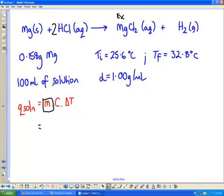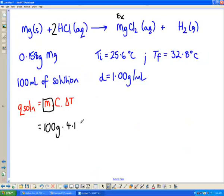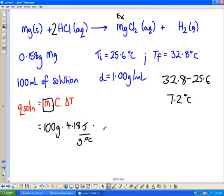So let's go ahead and calculate the Q for the solution. If the volume of the solution is 100 mils and the density is 1 gram per mil, that means our mass is 100 grams. Simple enough. We're going to assume that this is just water, so we're going to use the specific heat capacity for water, which we said before was 4.18 joules per gram per degree C. Notice grams on the top, grams on the bottom. Delta T, 32.8 minus 25.6, ends up being 7.2 degrees C.